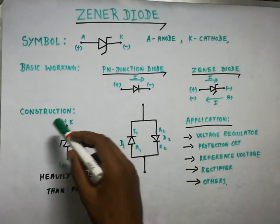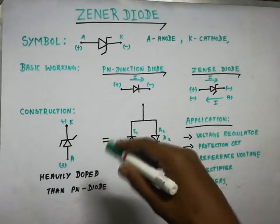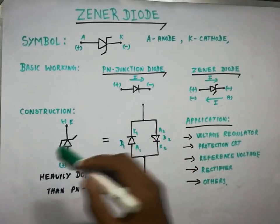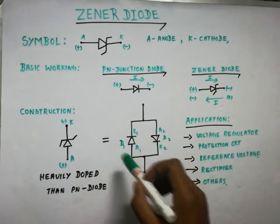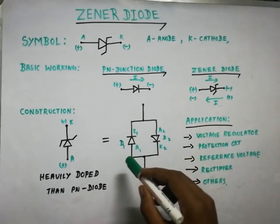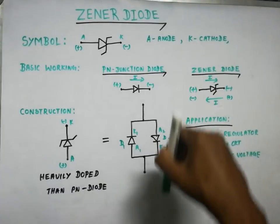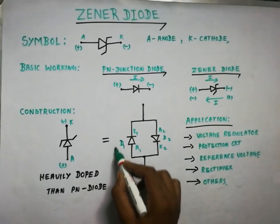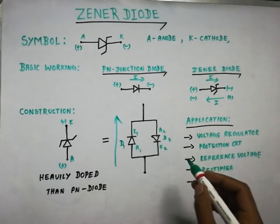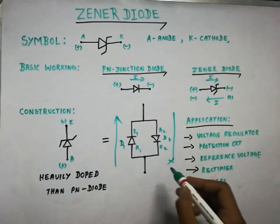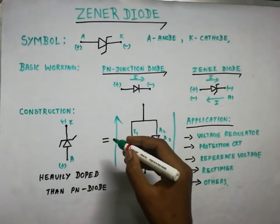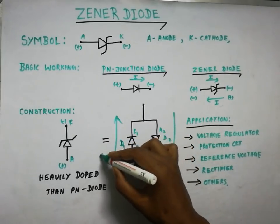Now let's look at the circuit and VI characteristics. We use two diodes: D1 for forward bias and D2 for reverse bias. In forward bias, the current flows through D1. In reverse bias, this is shown separately. Looking at the curve, the horizontal axis is voltage and the vertical axis is current. In forward bias, there is a breakdown — cut-in — voltage of 0.7 volts.